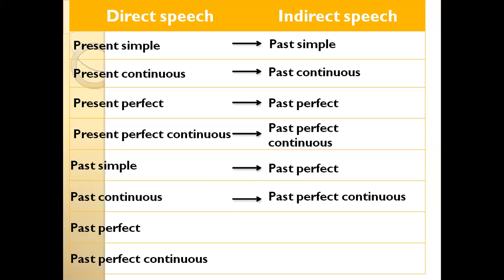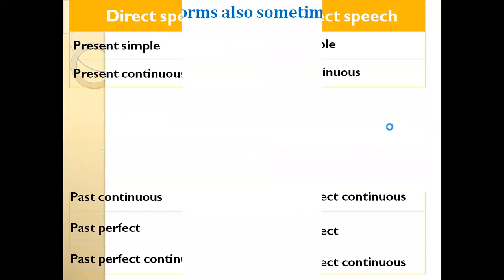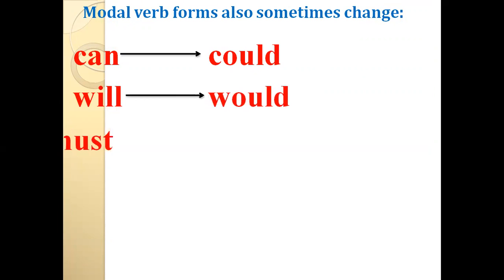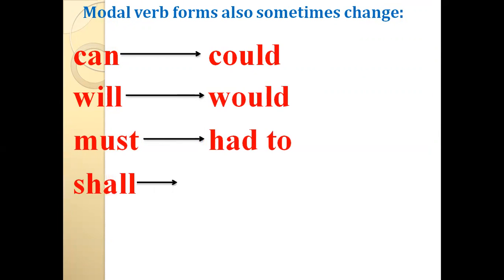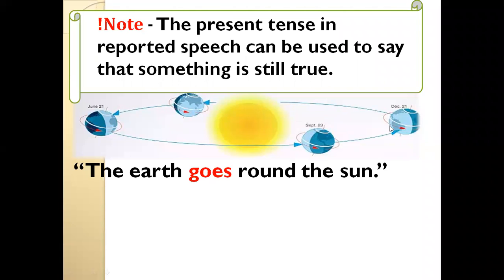Past perfect continuous also exists as a shifted form. Past perfect and past perfect continuous don't change — we use them as they are. Modal forms also sometimes change: 'can' becomes 'could,' 'will' becomes 'would,' 'must' becomes 'had to,' 'shall' becomes 'would' or 'should,' and 'may' becomes 'might.' These tense changes cannot be made when the sentence expresses a general truth or the reporting verb is in the present simple form — for example, 'The earth goes around the sun' will not change.